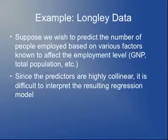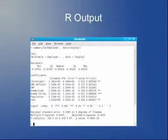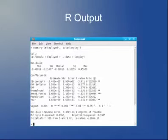Recall the Longley data, where you're trying to predict the number of people employed based on factors like gross national product and total population — you get extremely collinear predictors, which makes the resulting regression model difficult to interpret. We see weird things like neither measure of GNP being associated with employment, and the coefficient for GNP is negative, as is the coefficient for population, suggesting that larger GNP or population means fewer people employed — which doesn't make sense. The basic issue is that all these variables are so strongly correlated.